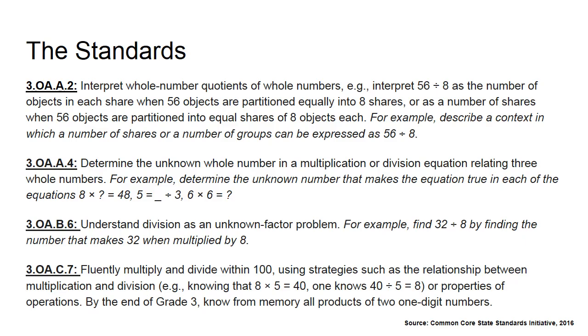Following, we're going to do the B6 standard, which is understanding division as an unknown factor problem. So in order to become fluent in multiplication and division, we need to be able to think about each operation as opposites, inverse. So if I'm looking for something, say 32 divided by 8, I can find that quotient by thinking about when I multiply 8, what would give me 32.